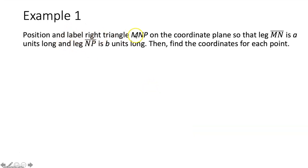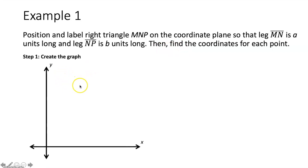Example one says: position and label right triangle MNP on the coordinate plane so that leg MN is A units long and leg NP is B units long, then find the coordinates for each point. Let's first create a set of axes. Notice that both legs of this right triangle have the letter N in them — that means N is going to be our right angle.